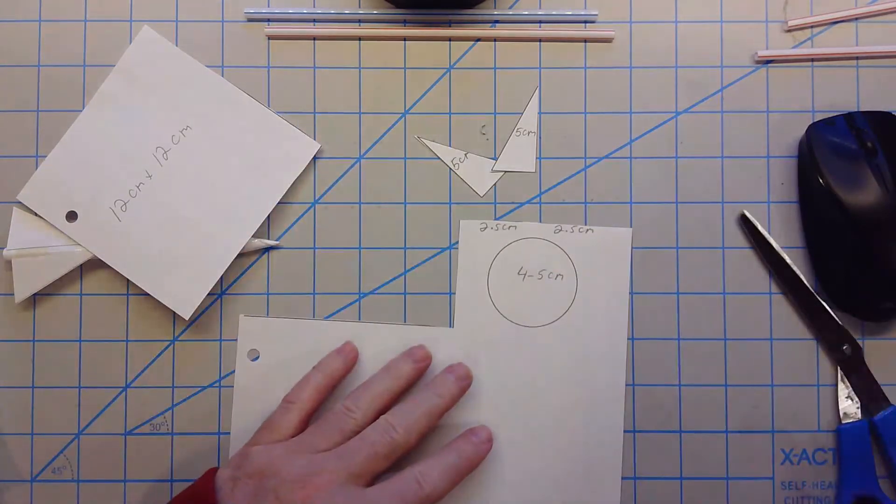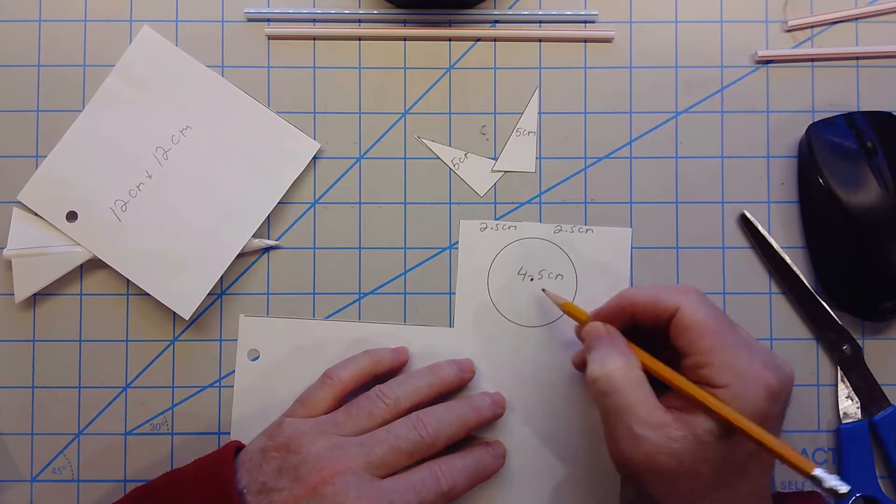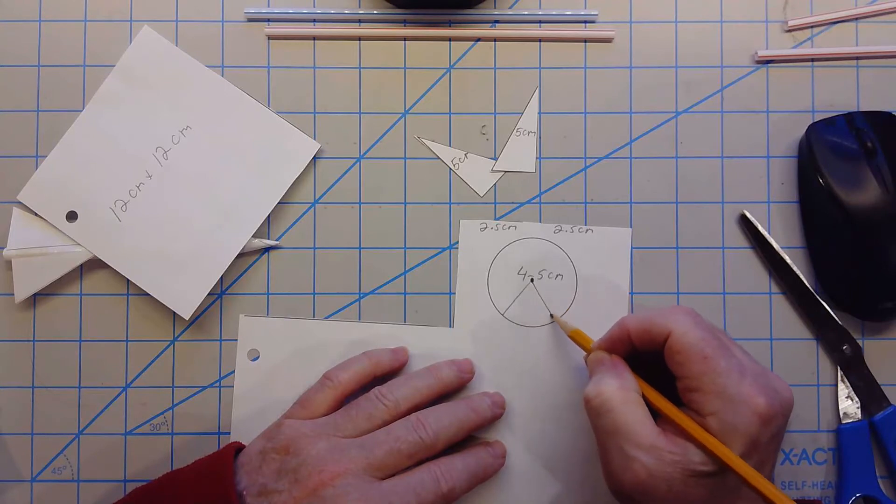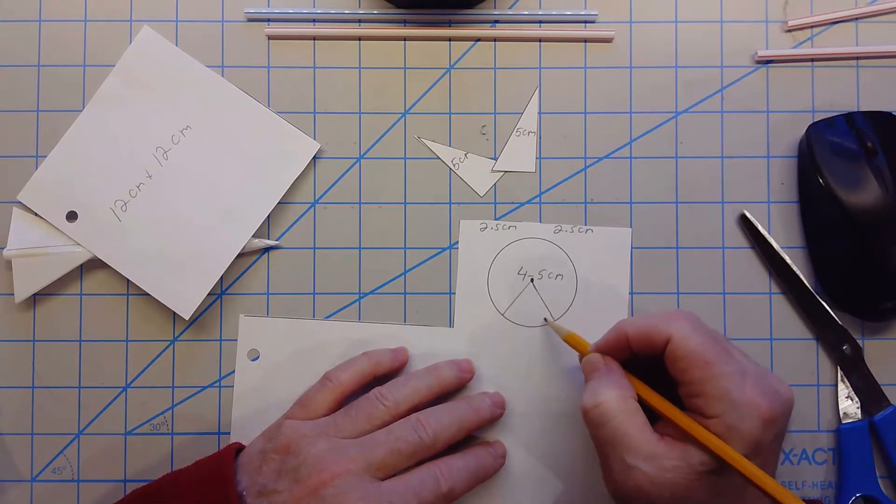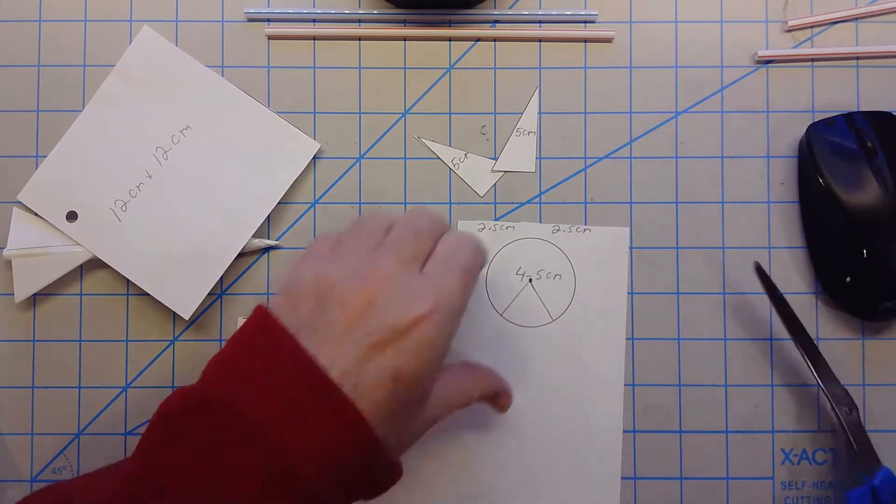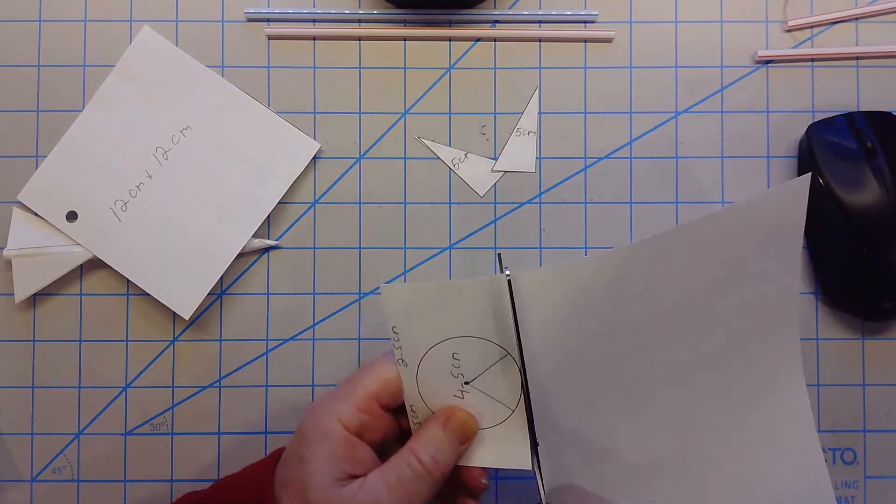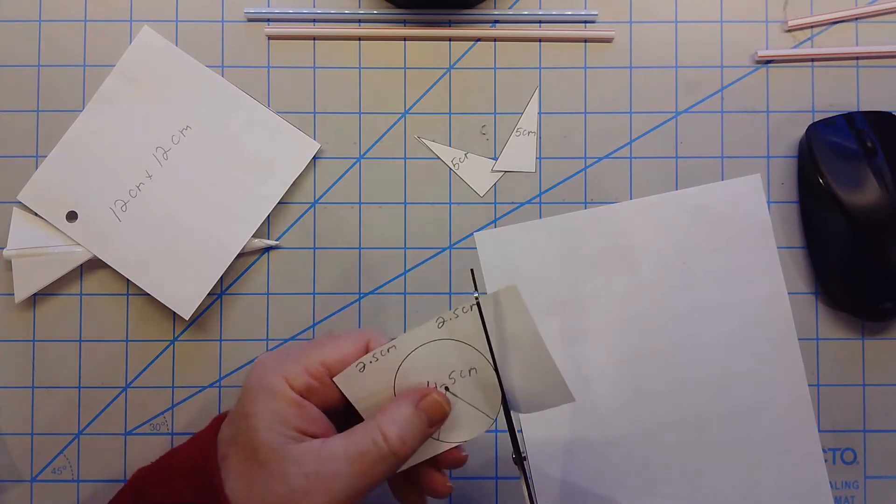Before you cut the circle out you want to find the center approximately, it doesn't have to be exactly, and then you want to draw kind of a piece of pie here, maybe about a sixth to an eighth, and you're gonna cut that out. So let's cut this circle out. It's actually really quite simple and it does travel pretty far.